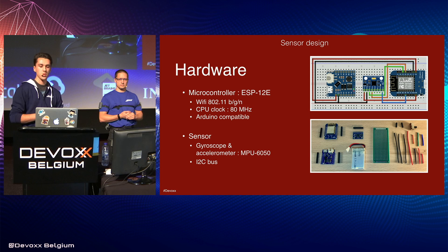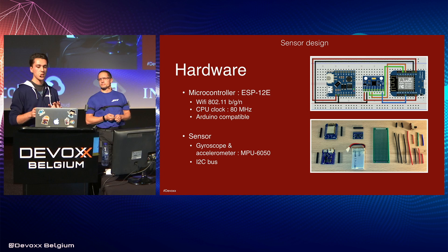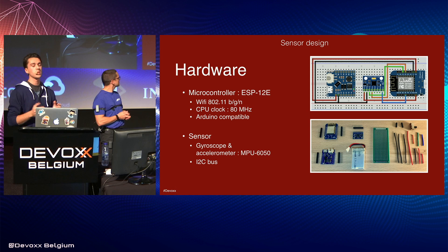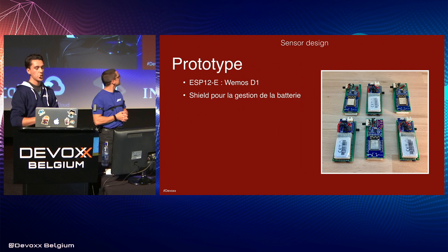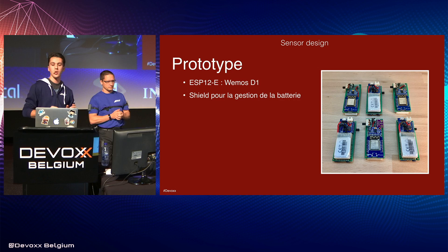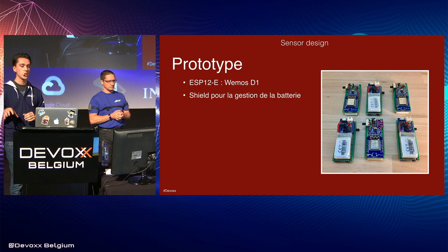To estimate the orientation, we need an accelerometer and a gyroscope. The MPU-6050 embeds both of them and is connected to the microcontroller by an I2C bus, a well-known electric bus in the industry. For the prototype, in order to simplify the hardware implementation, we used a board named Wemos D1 that bundles the ESP12E. This board is interesting for prototyping because it proposes some shields, like a lithium battery charger, and also handles voltage regulation for the microcontroller.